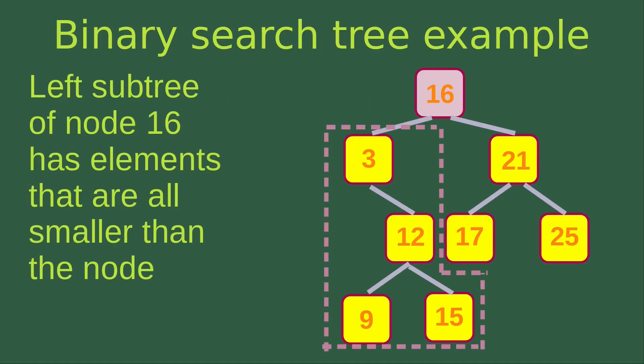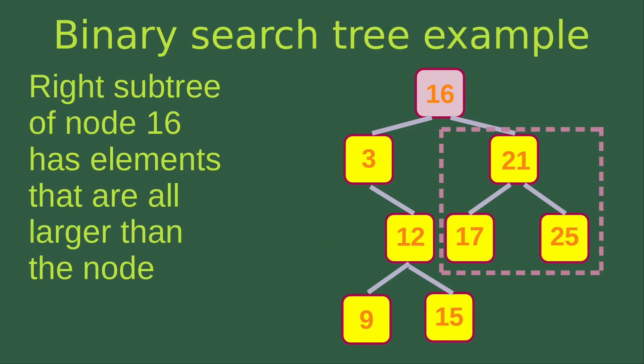Let's take a look at this example of a binary search tree. I'm going to verify that this one is a binary search tree. First, we see that the left subtree of node 16 has elements that are all smaller than the node. The left subtree of node 16 is confined by the dashed lines, and we can see that this subtree has elements that are all smaller than 16. Then we take a look at the right subtree of node 16, and we can see that it has elements that are all larger than the node — the dashed line region has elements all larger than 16.